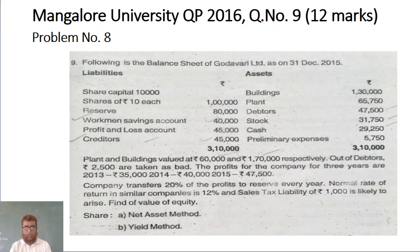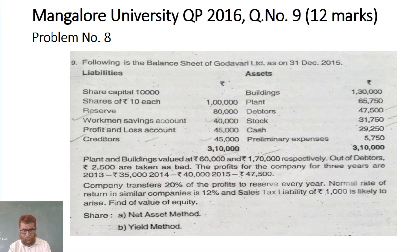Following is the balance sheet of Godavari Limited as on 31st December 2015. Liabilities are given: share capital, reserve, workman's saving account, profit and loss account, creditors. Assets include: building, plant, debtors, stock, cash, preliminary expenses. Plant and building are valued at 60,000 and 1,70,000 respectively.